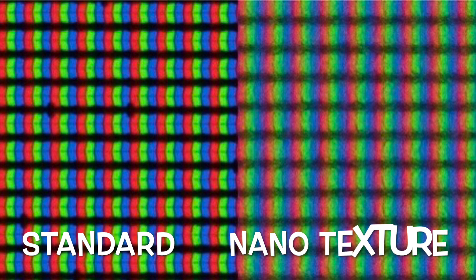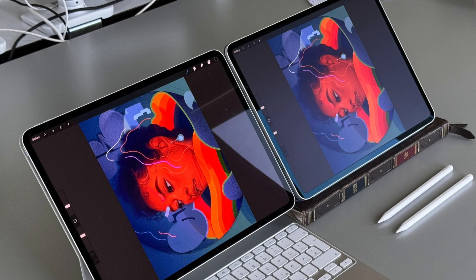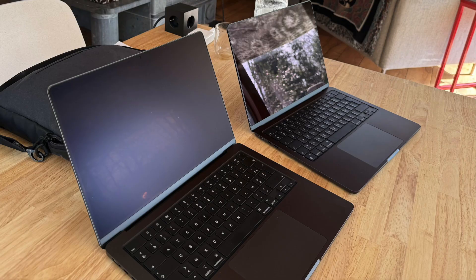Second, does nanotexture affect image quality and sharpness? Here's where nanotexture has a small downside. Since the etched surface diffuses light, it can make the image appear slightly softer compared to the crisp clarity of standard glass. Standard glass gives you the sharpest and clearest image, while nanotexture has a slightly more matte appearance. However, the difference is subtle and may not bother most users.